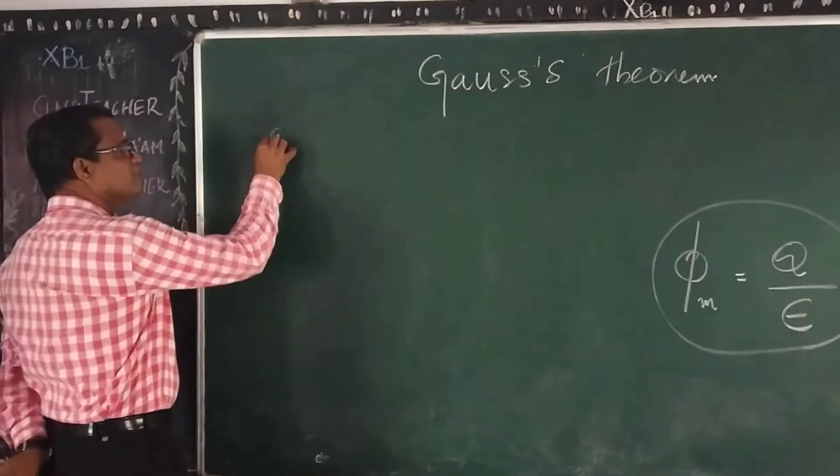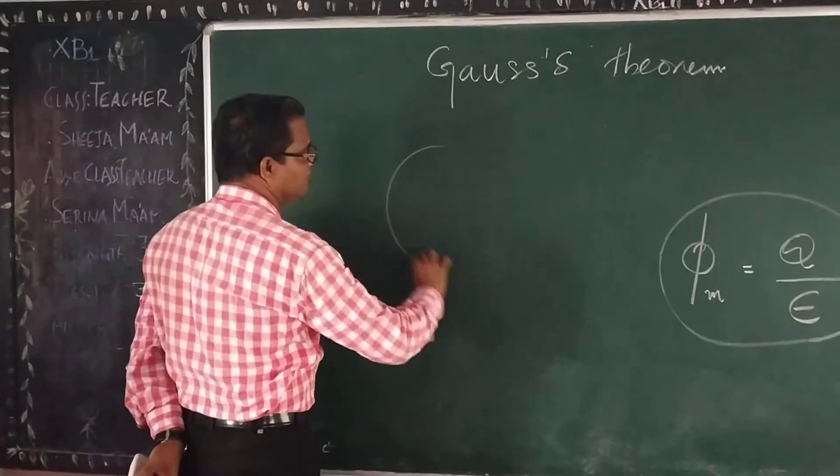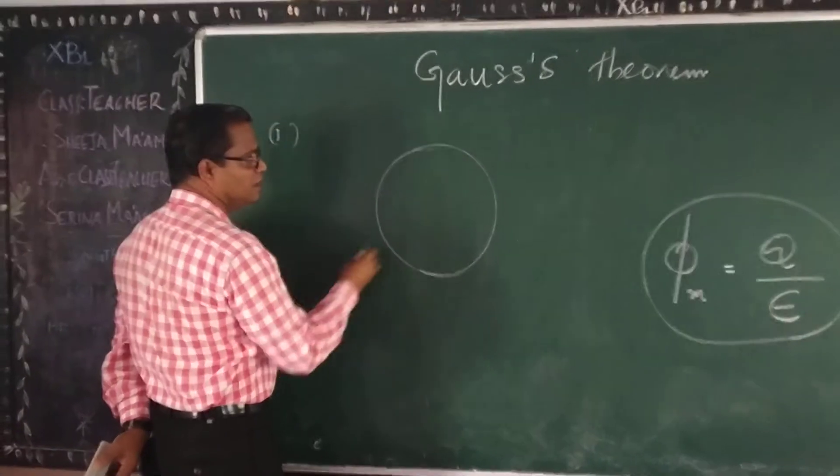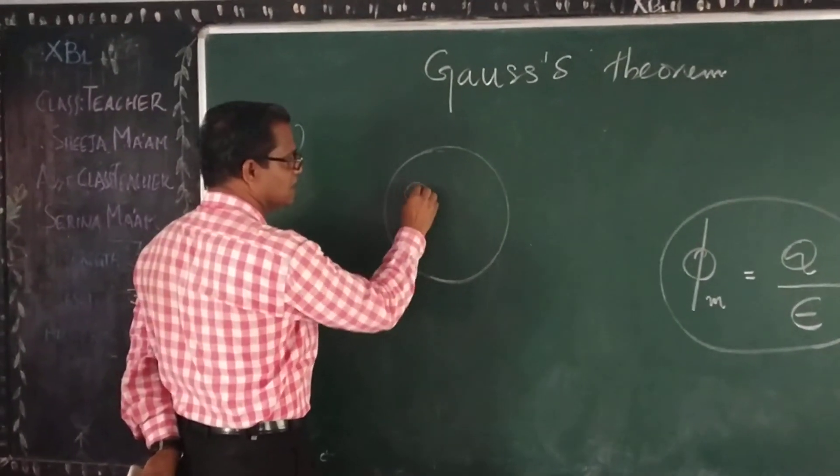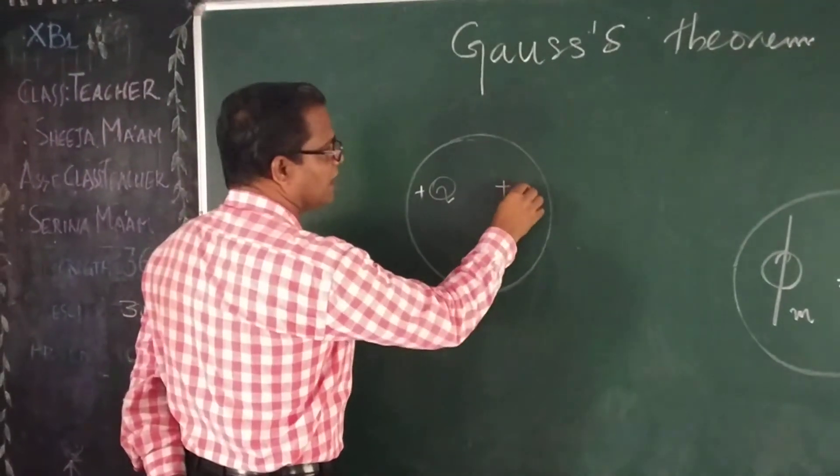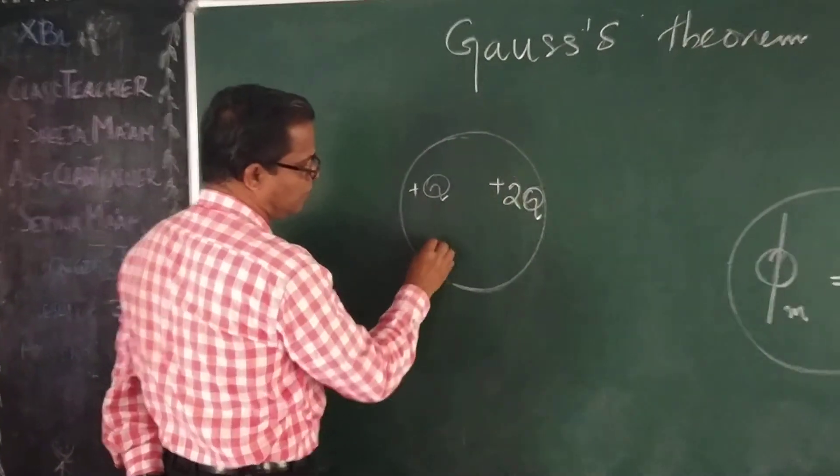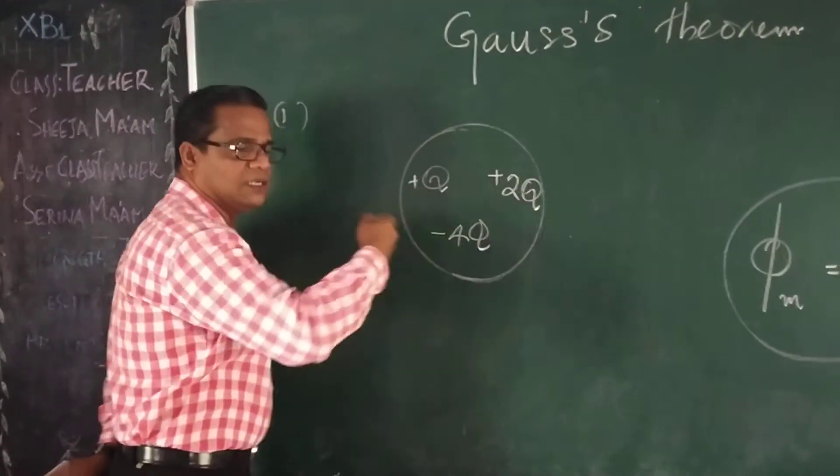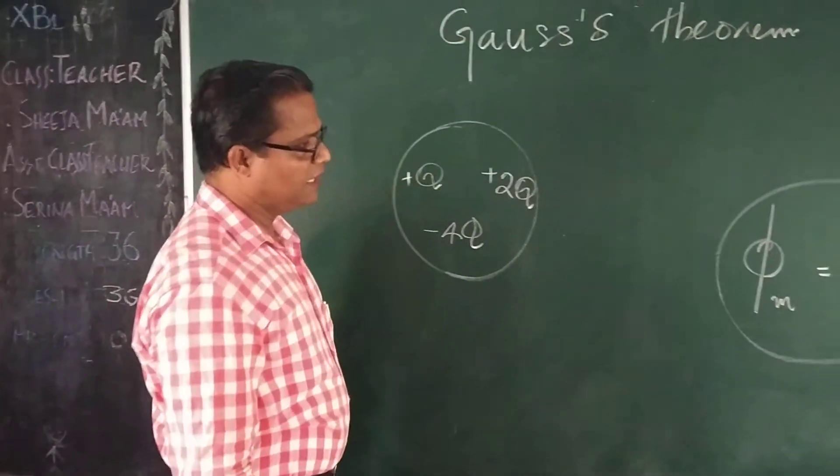Example 1. Suppose I have a sphere that is enclosing charges capital Q, 2Q, minus 4Q, a group of charges.